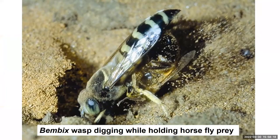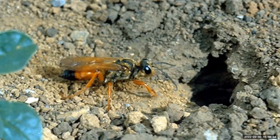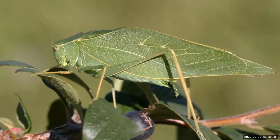Here's Bembix, a sand wasp, actually digging a horsefly down into her nest. This is a wonderful one — the golden digger wasp, which I collected for the first time last summer. They're predators of grasshoppers or katydids. Here's this individual in front of her single-celled nest; the prey item she might drag down would likely be a nymph, something smaller.